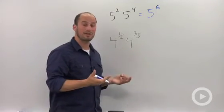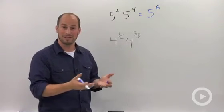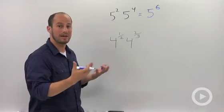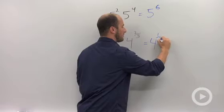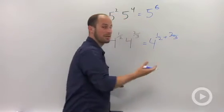4 to the 1 half times 4 to the 2 thirds. Again, we're multiplying bases, so all we have to do is add our exponents. This turns into 4 to the 1 half plus 2 thirds.